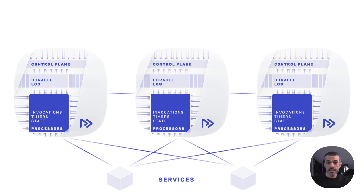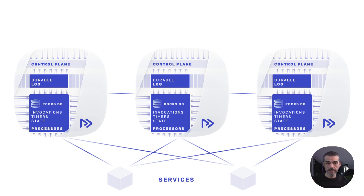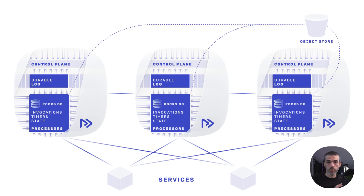It has a tiered architecture: a distributed log for fast appends and primary durability; data tables for storing invocations, state, and timers in an embedded database called RocksDB; and an object store or persistent volumes for storing RocksDB snapshots. Most data stays in the object store, so ReState only needs to keep a few minutes of data, allowing clusters to scale and recover quickly. This makes it efficient for both cloud and on-premise environments.